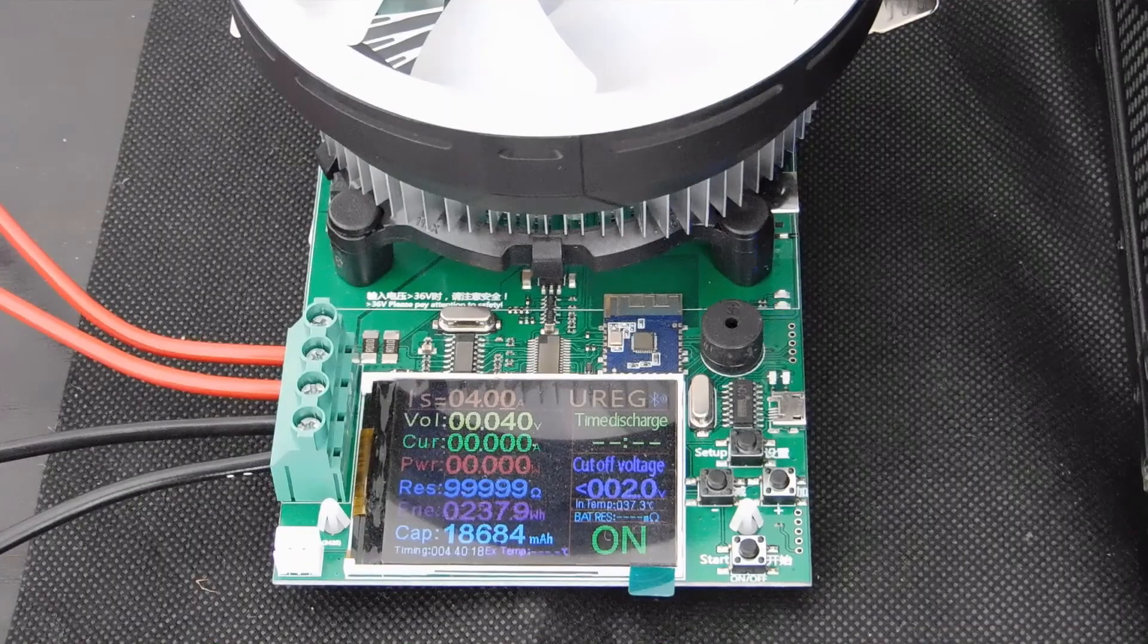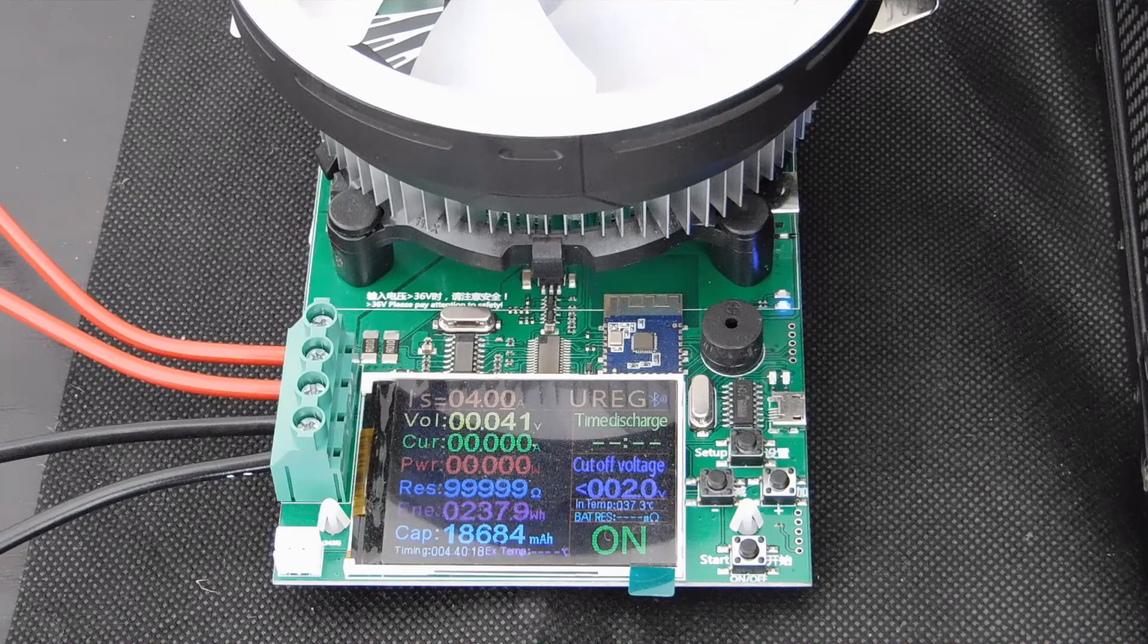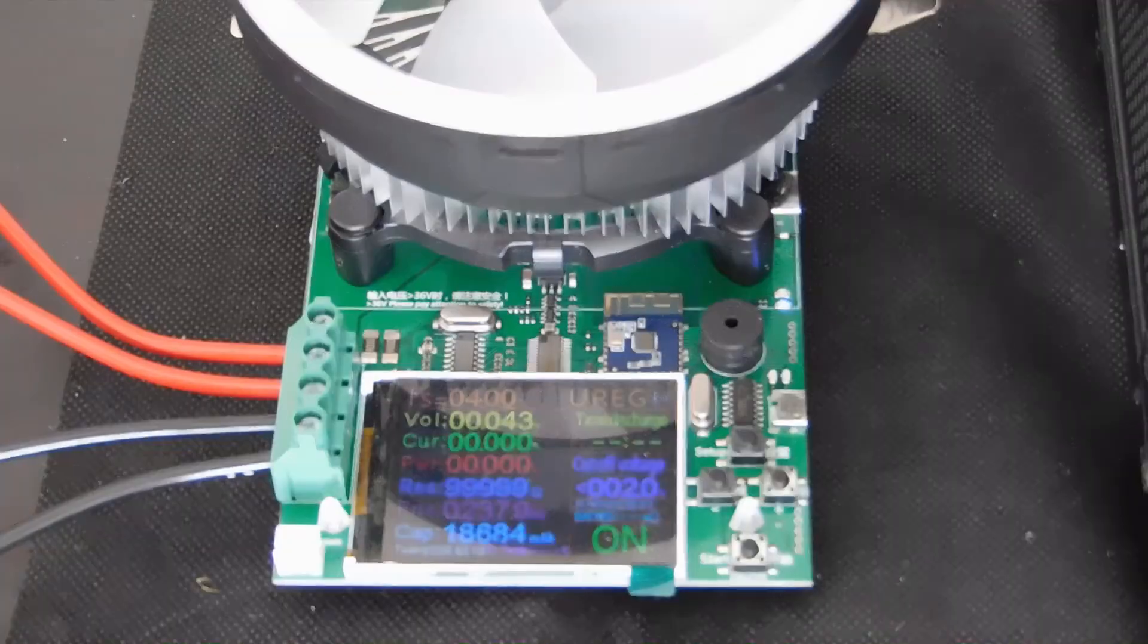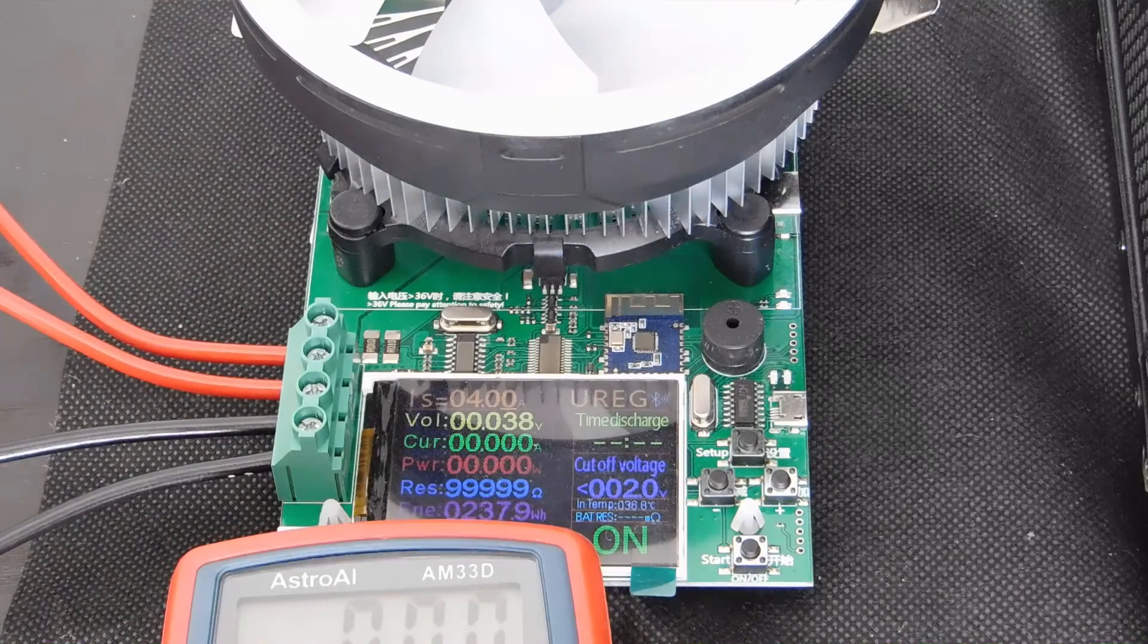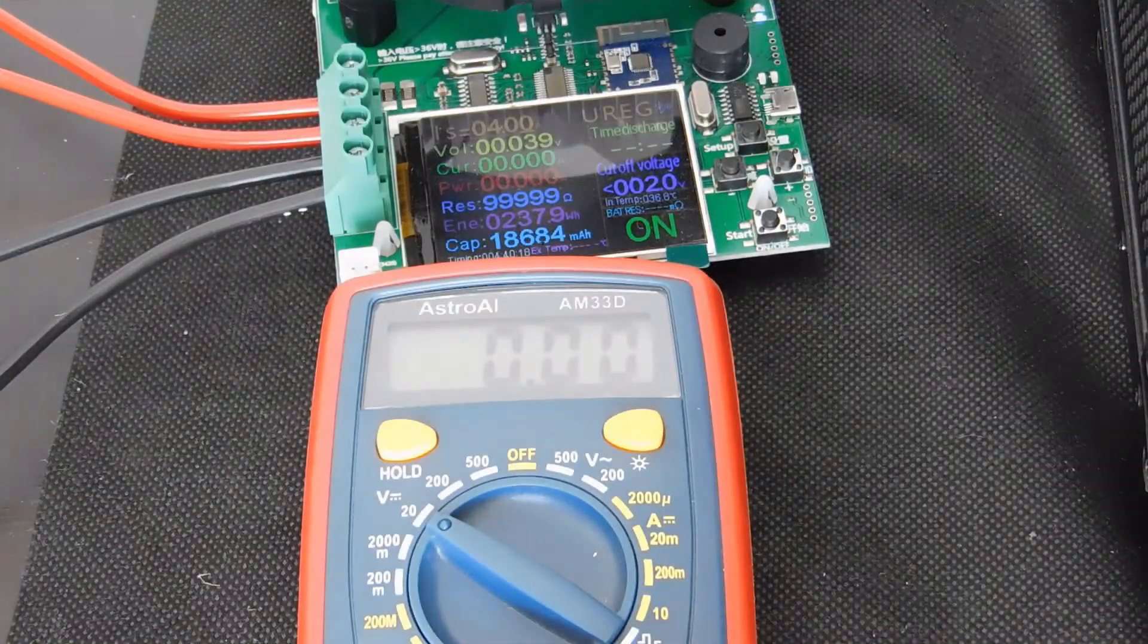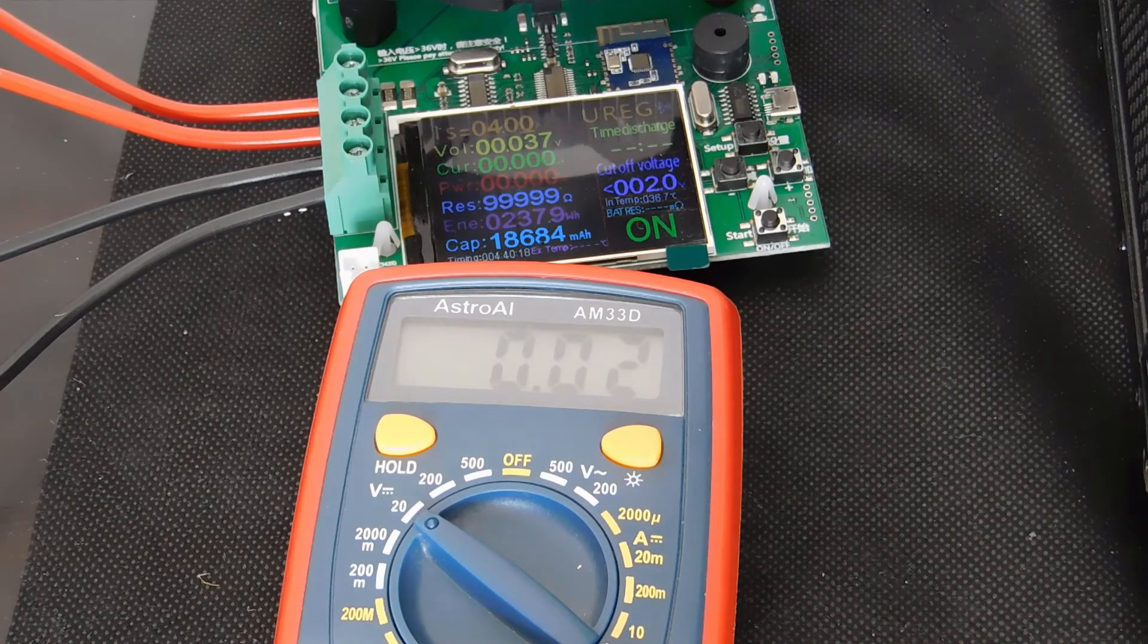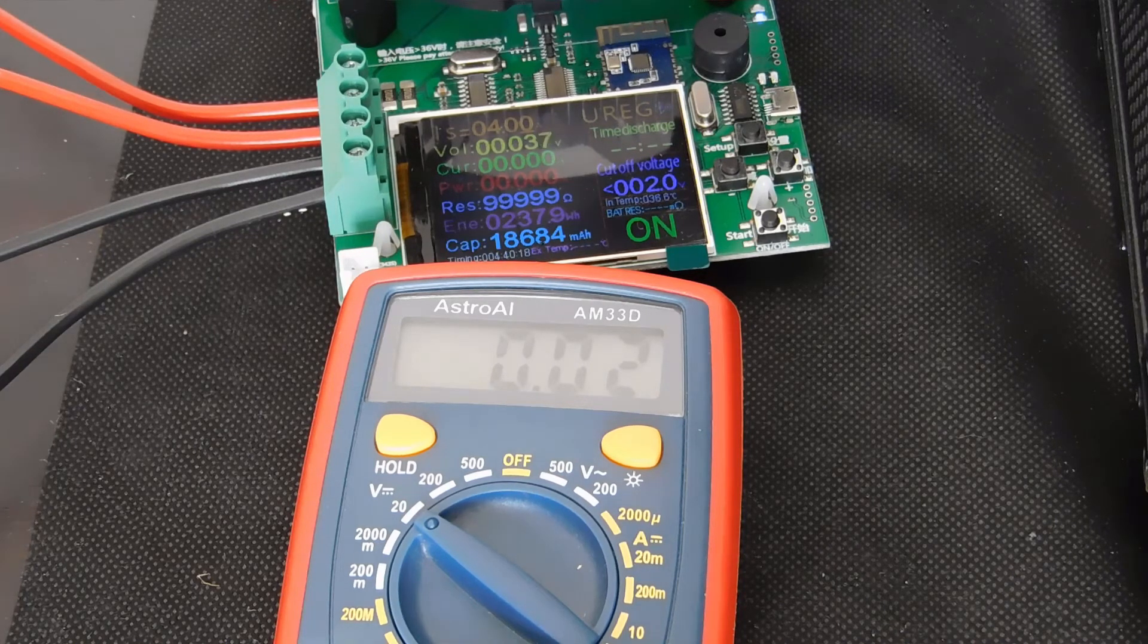Looks like we've cut out early at 18.6 amp hours, 237 watt hours for this battery. So let's take a look at what our voltmeter is saying. Let's move this into the shot. 0.02. So that is the end of this battery.